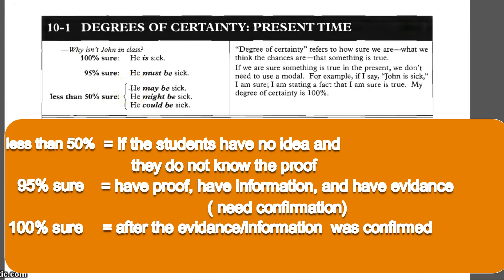Jika terdapat siswa yang memiliki sedikit bukti — misalnya, tadi malam saya melihat John di apotek dan dia membeli obat, mungkin untuk dirinya sendiri. Karena ada sedikit fakta bahwa John pergi ke apotek dan membeli obat, tingkat degree of certainty meningkat menjadi 95%. Makanya kita menggunakan 'he must be sick.'